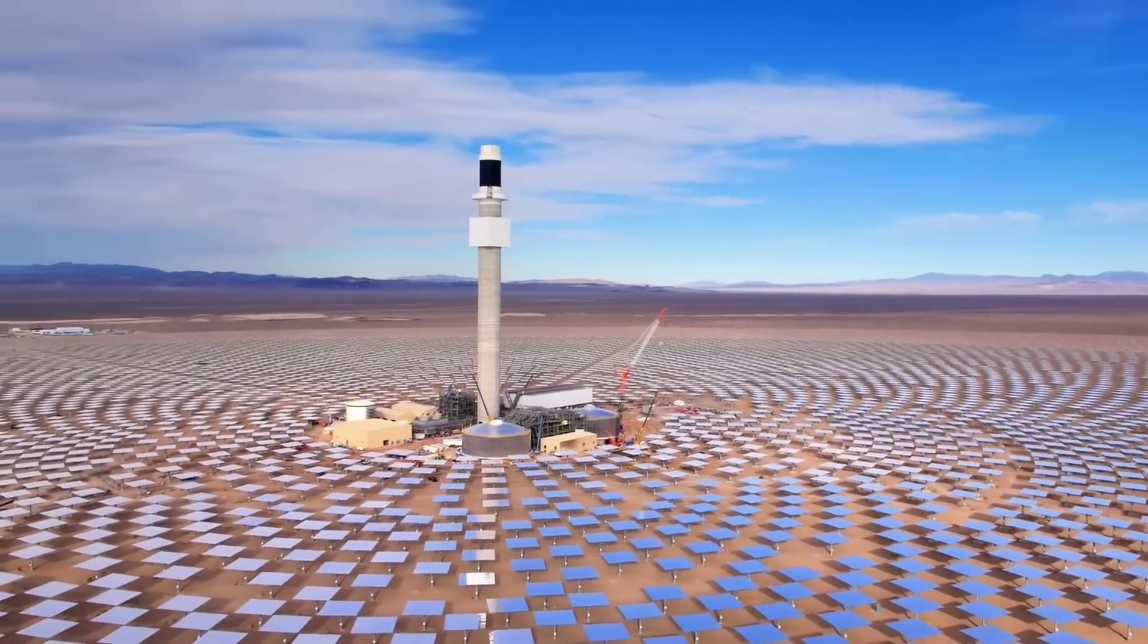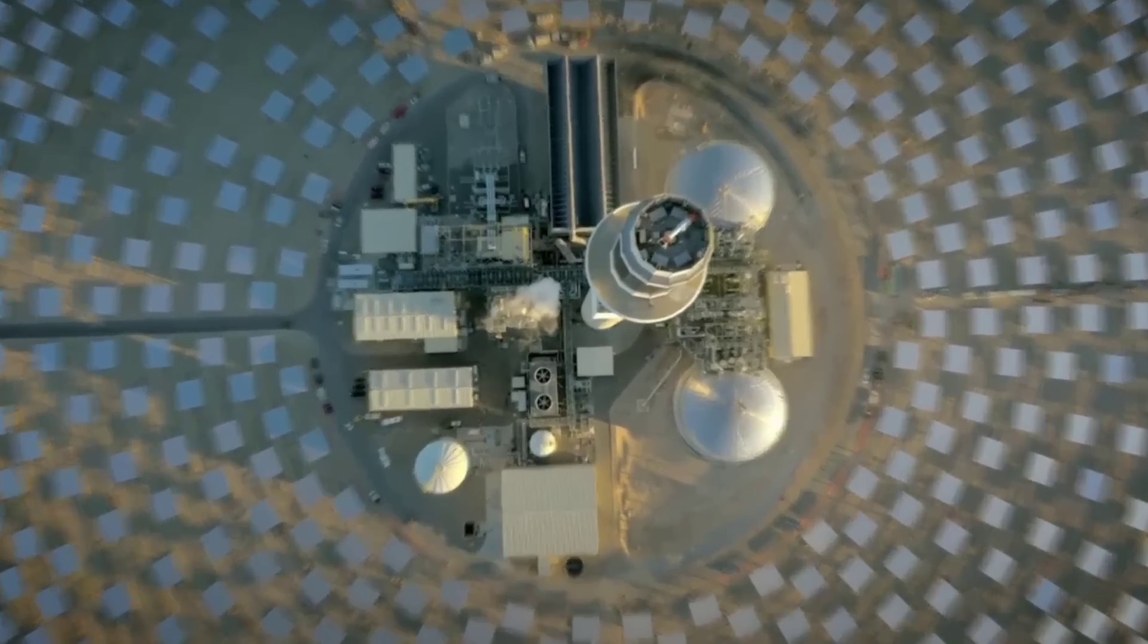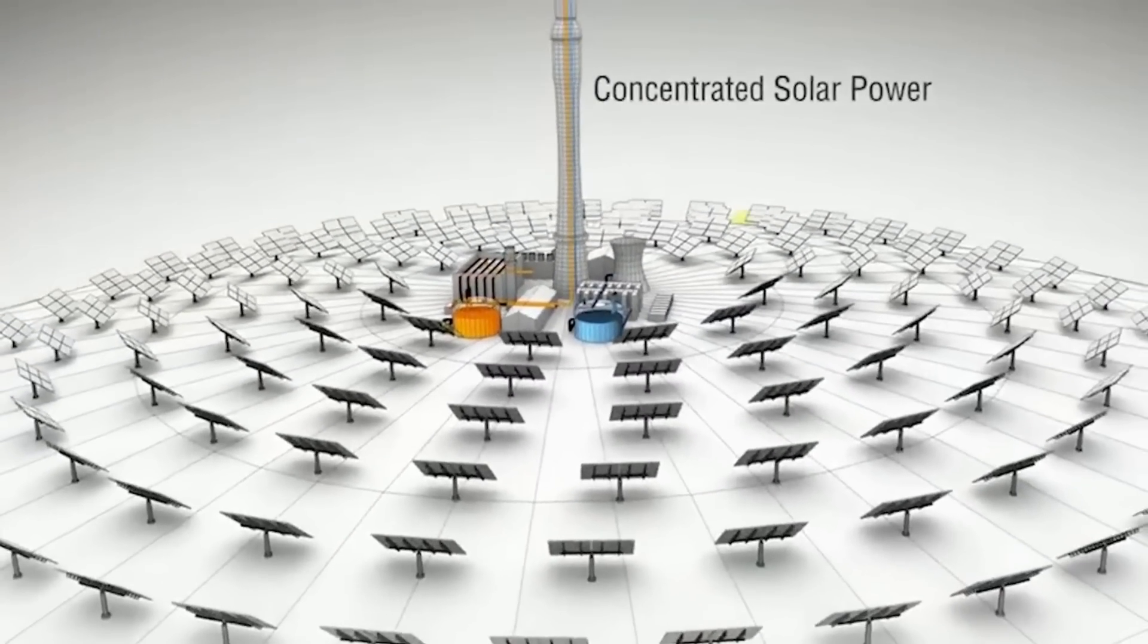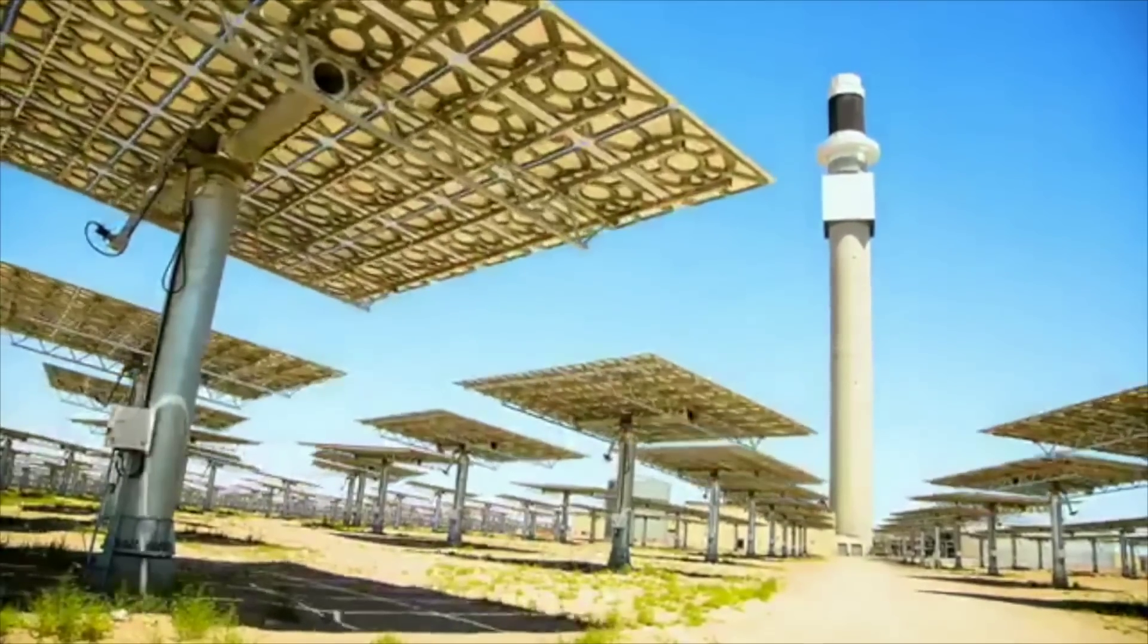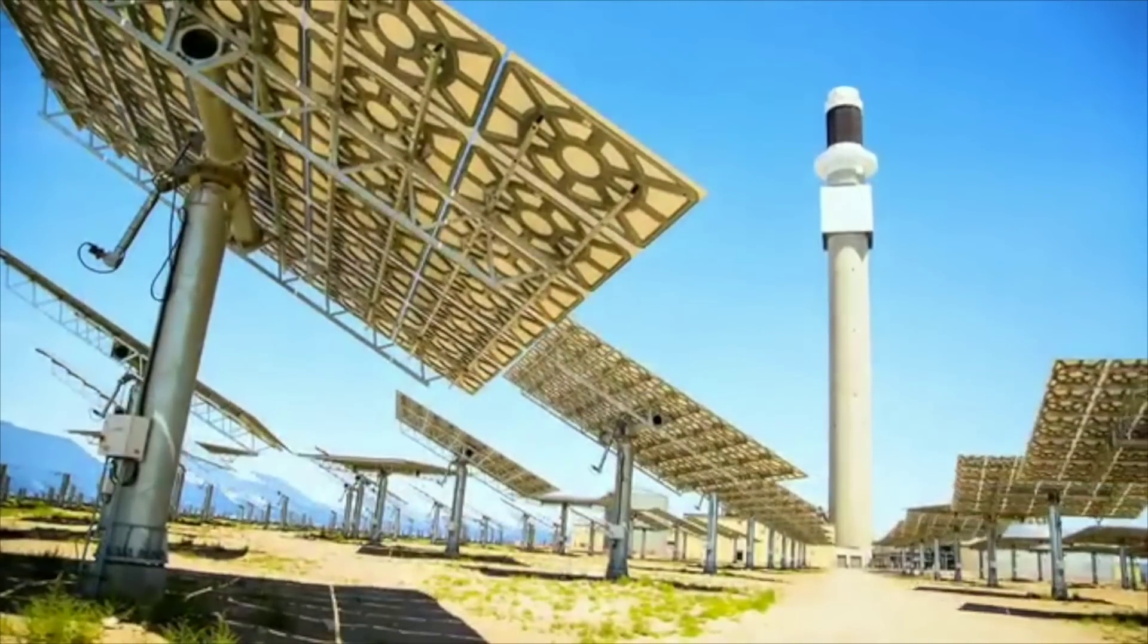The plant used a technology called concentrated solar power, CSP, which involved three steps: concentration, collection, and conversion. The concentration step used the heliostats to reflect and focus the sunlight onto the tower.